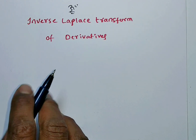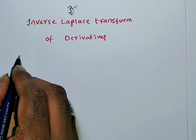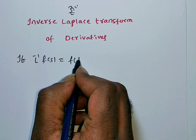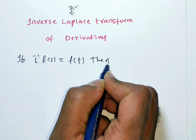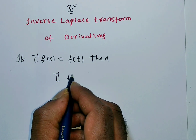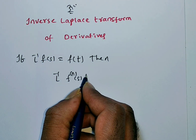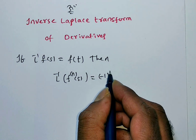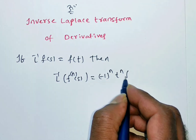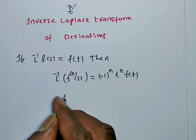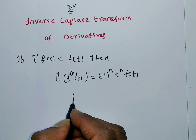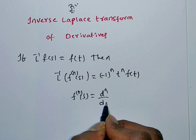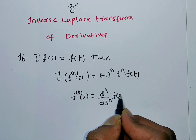The statement of inverse Laplace transformation is: if L inverse of F of S is equal to F of T, then L inverse of the nth derivative of F of S is equal to minus 1 whole to the power n, into T to the power n, into F of T.